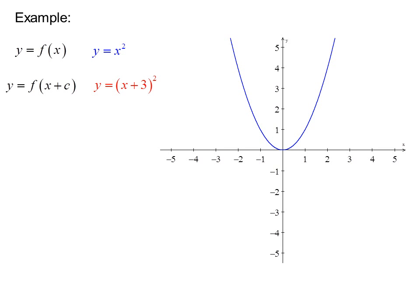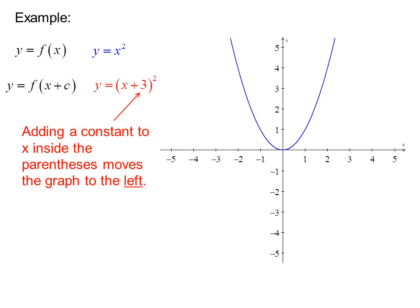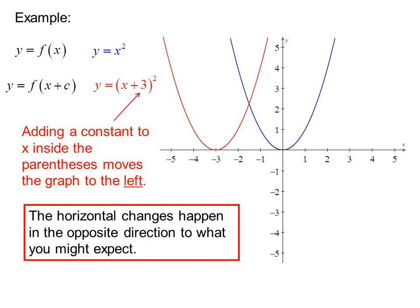If I add a constant inside the parentheses, adding a constant to X inside the parentheses moves the graph to the left. In this case, we can take the vertex and move it left 3 and redraw the parabola. The horizontal changes happen in the opposite direction to what you might expect: positive moves it to the left, negative moves it to the right.